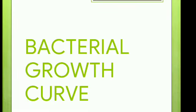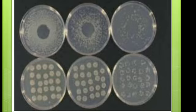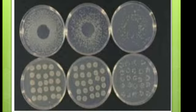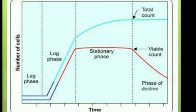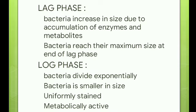Bacterial growth curve. When a bacterium is inoculated into a suitable liquid medium and incubated, its growth follows a different course. When bacterial count of such a culture is determined at different intervals and plotted in relation to time, a bacterial growth curve is obtained. It comprises four phases: lag phase, log phase, stationary phase, and the phase of decline. Now let's see in detail about all phases.